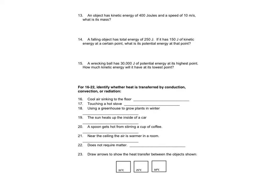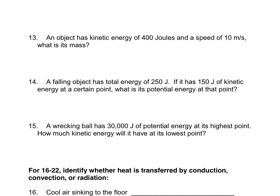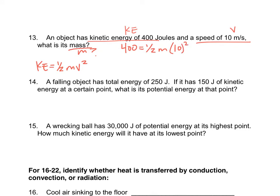Moving to page 18 for calculations. Number 13: an object has kinetic energy of 400 joules and a speed of 10 m/s — find its mass. Using KE = ½mv²: 400 = ½ × m × 10². Since 10² = 100 and 100 × ½ = 50, we get 400 = 50m. Dividing both sides by 50 gives m = 8 kilograms.